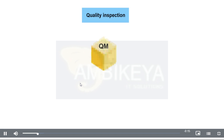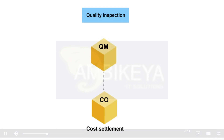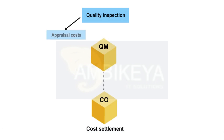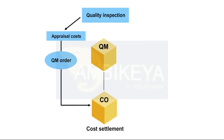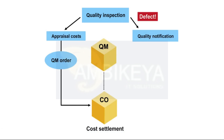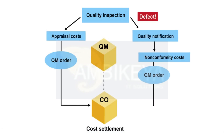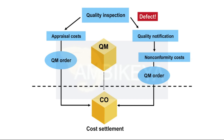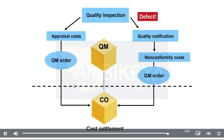An inspection usually generates appraisal and non-conformity costs that can be posted to a QM order for cost settlement in controlling. This can be a general QM order that is assigned to the material for a specific inspection type, or an individual QM order.